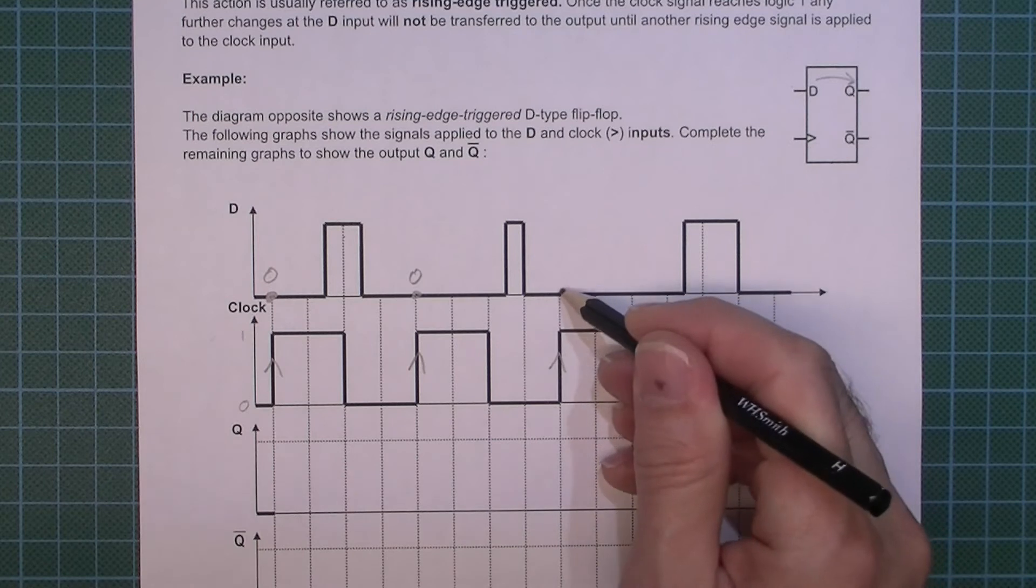So zero will be transferred, zero will be transferred. Each time these are zeros, on this rising edge you'll note that the input D is a logic one, so that logic one is going to be transferred.